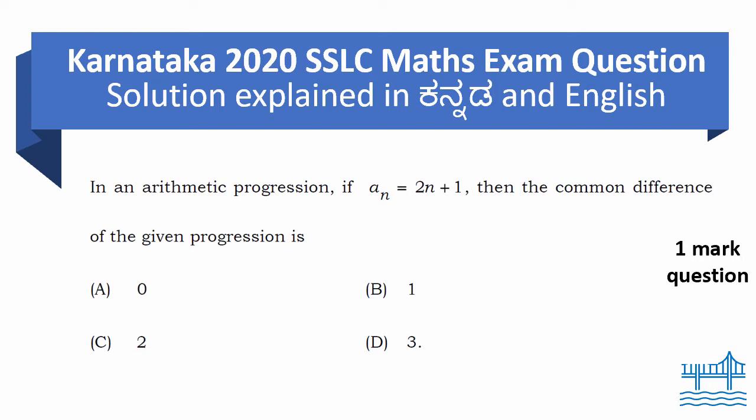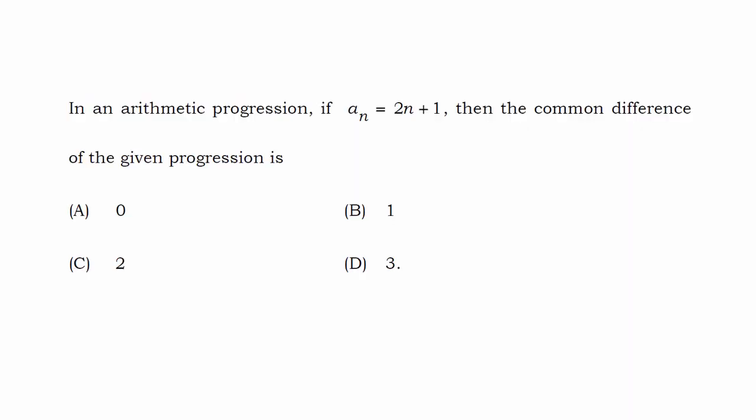Let us look at the question. In an arithmetic progression, if a of n equals 2n plus 1, then the common difference of the given progression is. The arithmetic progression equation is a of n equals 2n plus 1. They want us to find the common difference d and the correct choice.